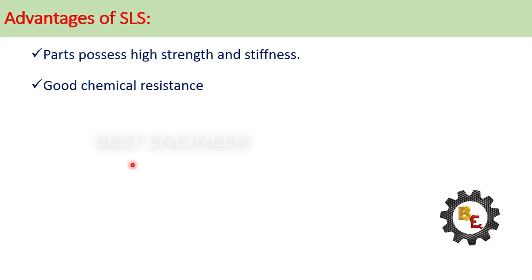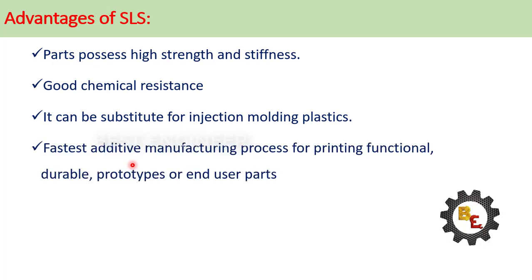Good chemical resistance. It can be substituted for injection molding plastics. The part strength depends upon the size of the powder particle. If you reduce the size, the strength of the object will be increased, so we can fabricate components where the strength will be equal to injection molding.